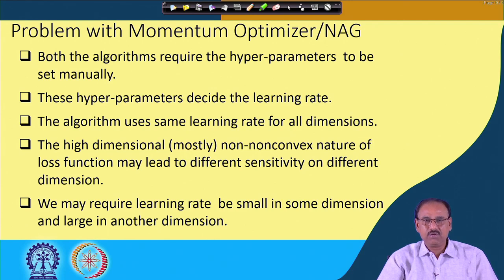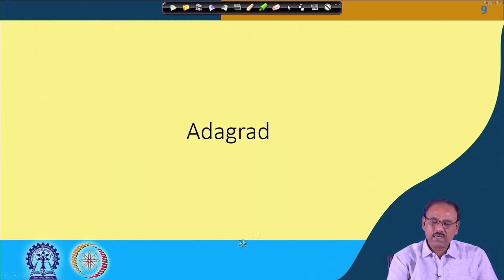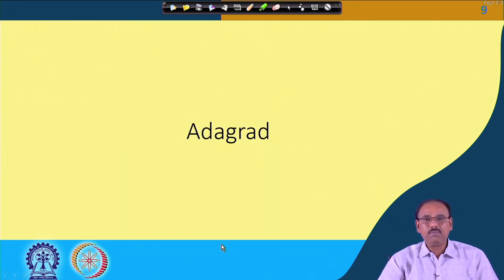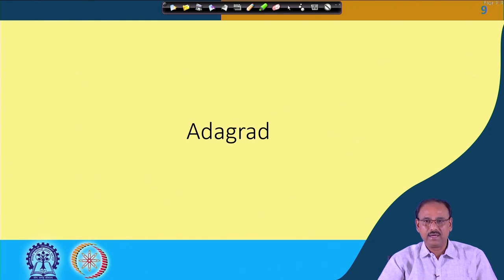As a result, the algorithm may require a small learning rate in the direction of higher gradient and a high learning rate in the direction of lower gradient. These problems of momentum and Nesterov accelerated gradient are addressed in another algorithm known as Adagrad.